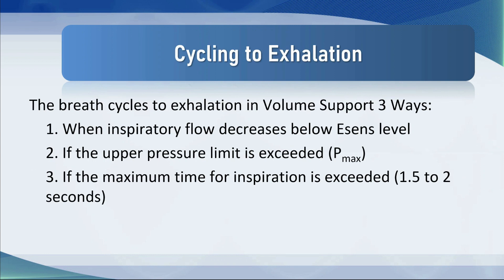Cycling to exhalation can occur three ways in volume support. First, when the inspiratory flow decreases below the expiratory sensitivity level — for example, if it's 25% of peak flow and the peak flow is 60 liters, it will cycle off at 15 liters. Second, if the upper pressure limit is exceeded — the Pmax — usually caused by the patient coughing or bucking on the ventilator. Third, if the maximum time for inspiration is exceeded, which defaults at 1.5 to 2 seconds — you certainly do not want to see two-second-plus inspiratory times on pressure support.